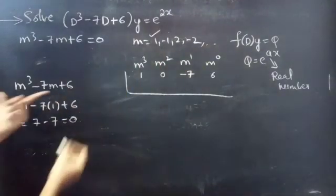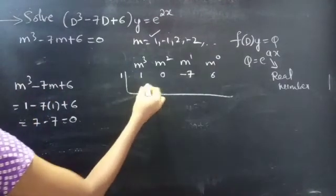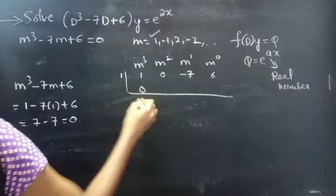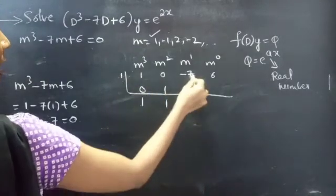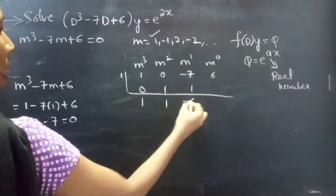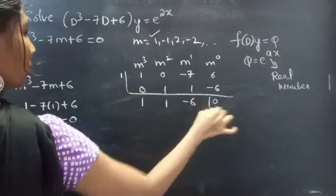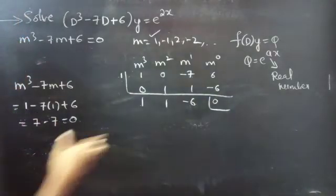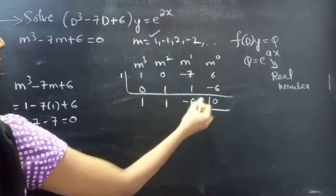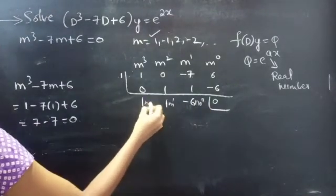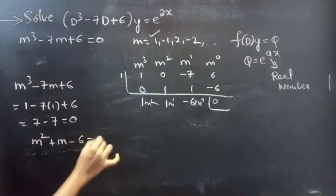Since m = 1 satisfies, we perform synthetic division. The coefficients give us: 1, 1, -6, and the remainder is 0. This yields the reduced polynomial m² + m - 6.